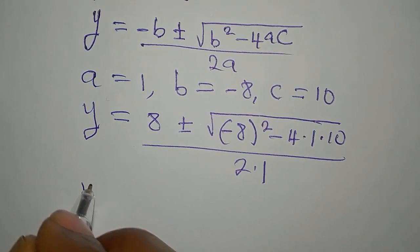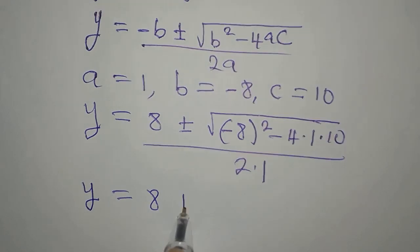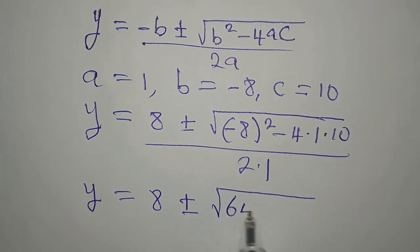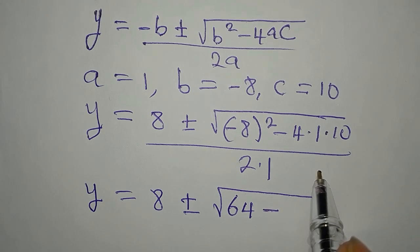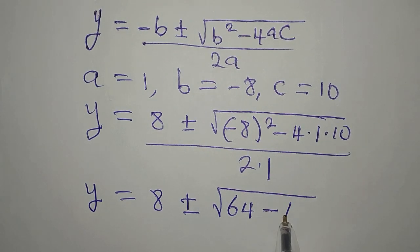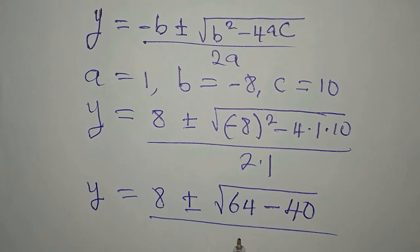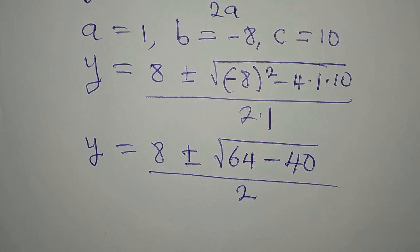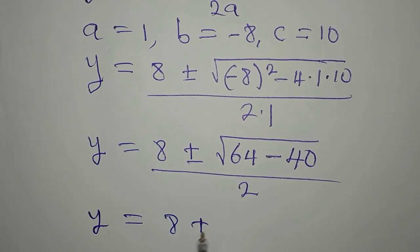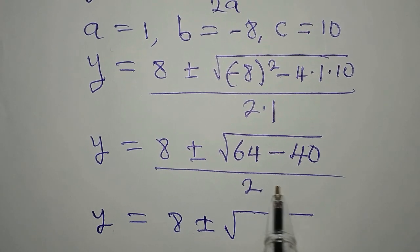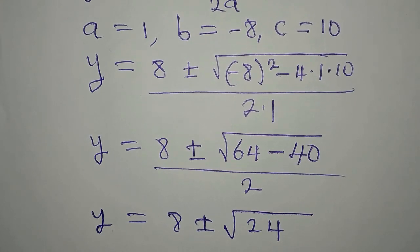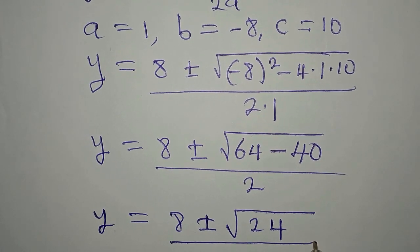To continue, y will be equal to 8 plus or minus: negative 8 squared is 64, then minus 4 times 1 times 10, that will be 40. Then we divide this by 2. So we are going to continue from here: y equals 8 plus or minus, and 64 minus 40 will give us 24. That is 24, and then this will be divided by 2.